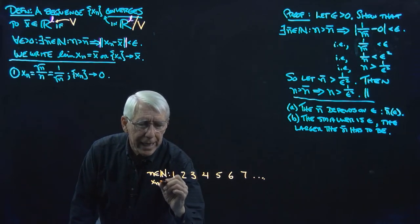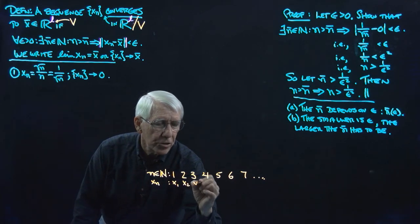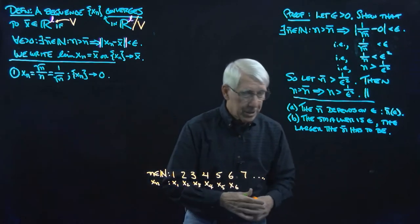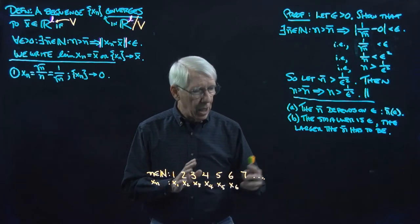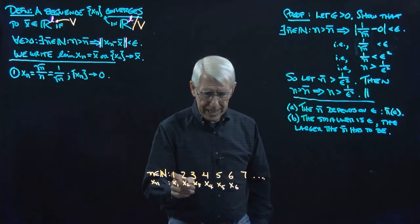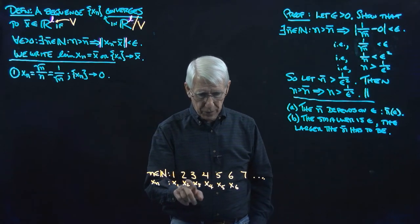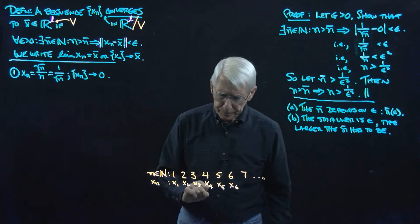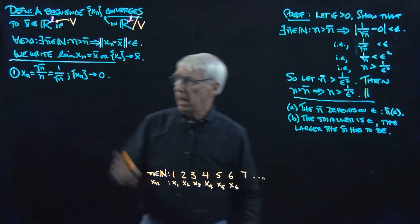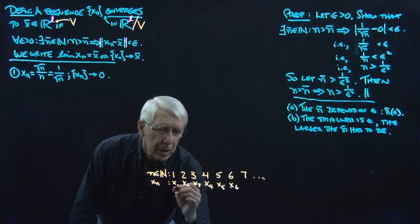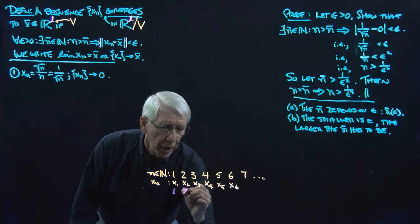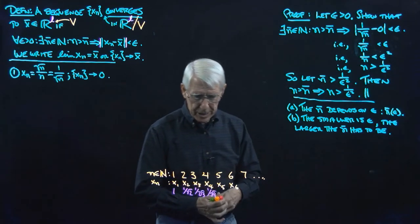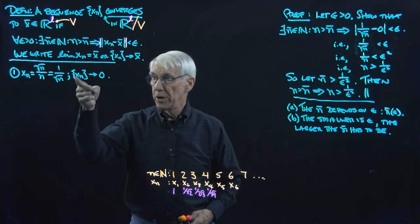And then I would have x_n. This would be x1, x2, x3, x4. You could say all this is obvious, and of course it is. But sometimes it's helpful to just do it to get insights. For the sequence we just did, this would be: x1 = 1, x2 = 1 over the square root of 2, x3 = 1 over the square root of 3, x4 = 1 over the square root of 4.